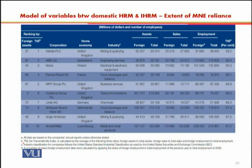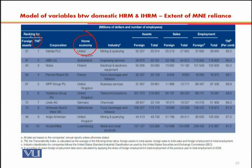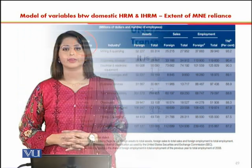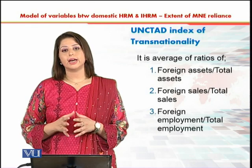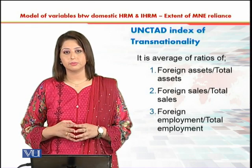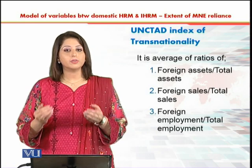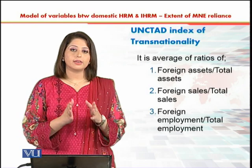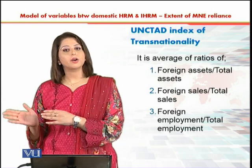If you look at this table, you will be able to see the column showing the home economy. You can see that none of the companies in the list of the top 10 companies in terms of the transnationality index belong to the USA. And why does that happen? You know that America is one of the biggest economies of the world, and none of the top 10 companies in the transnationality index are coming from the United States.